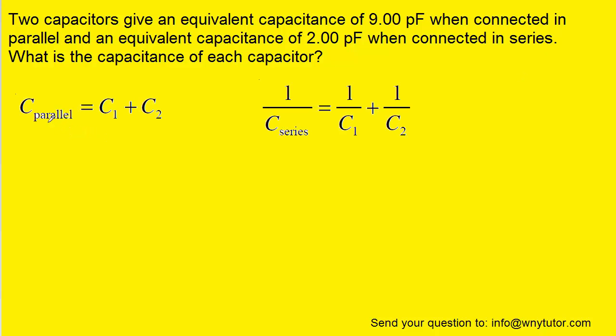So for the parallel case, the total capacitance is given by the sum of the individual capacitances. And then for the series arrangement, we have this sort of reciprocal equation. Now, we were told that the parallel capacitance was 9 picofarads, so we can actually plug 9 in for this C parallel.